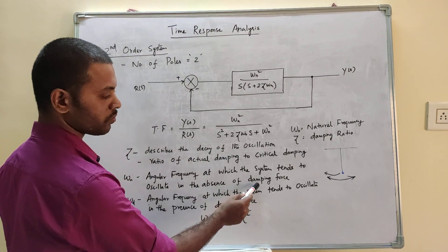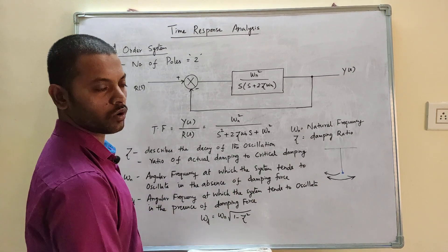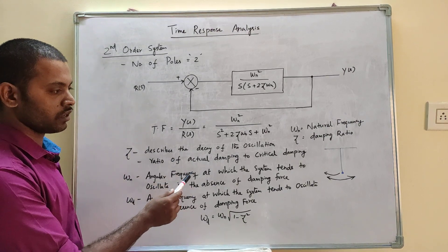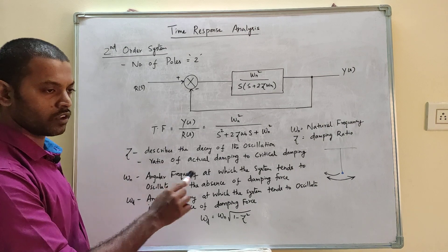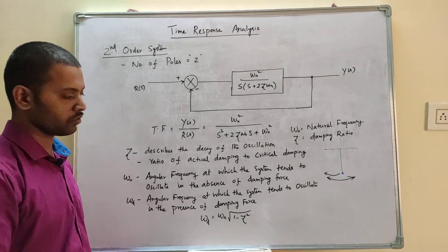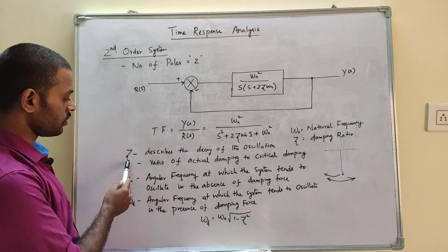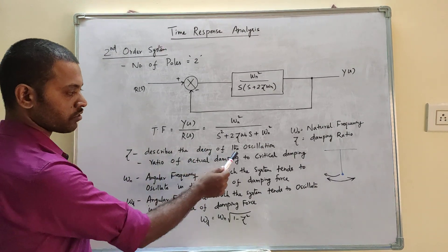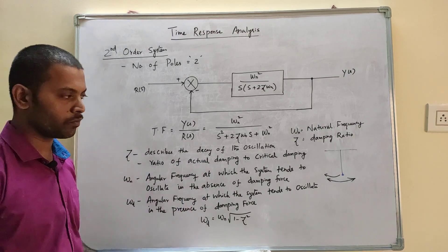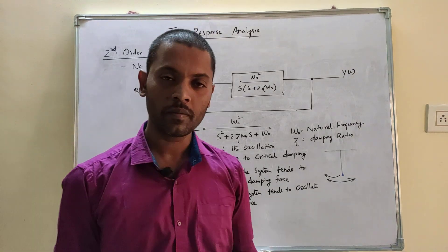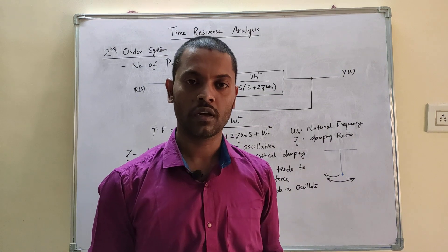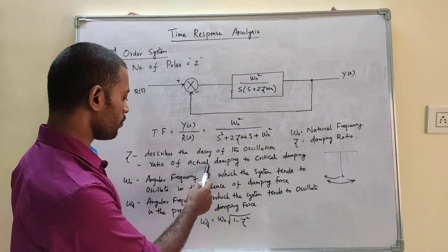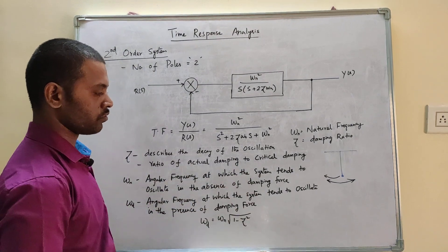Suppose friction is one example of a damping force. When damping is present, it affects the system oscillation. The damping ratio zeta describes the decay of oscillation — whether oscillation is sustained or prevented. It is defined as the ratio of actual damping to the critical damping.